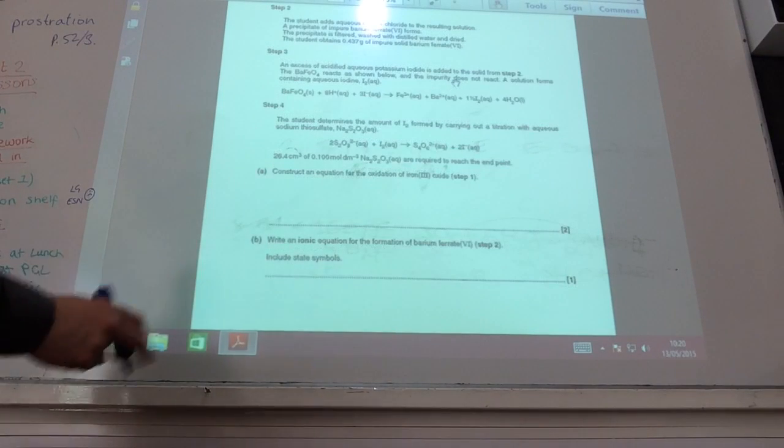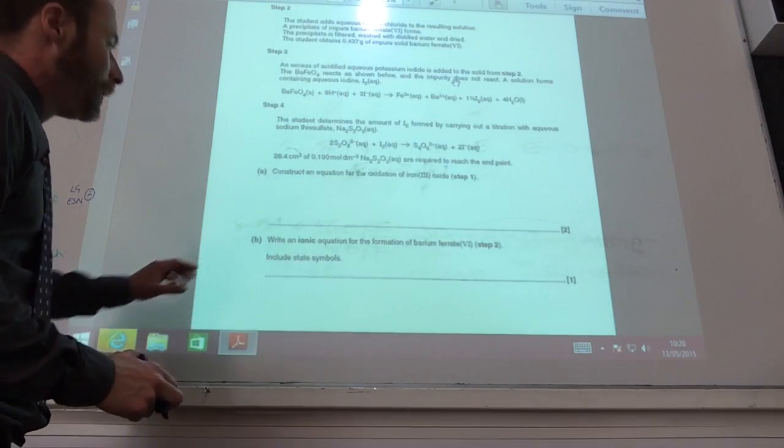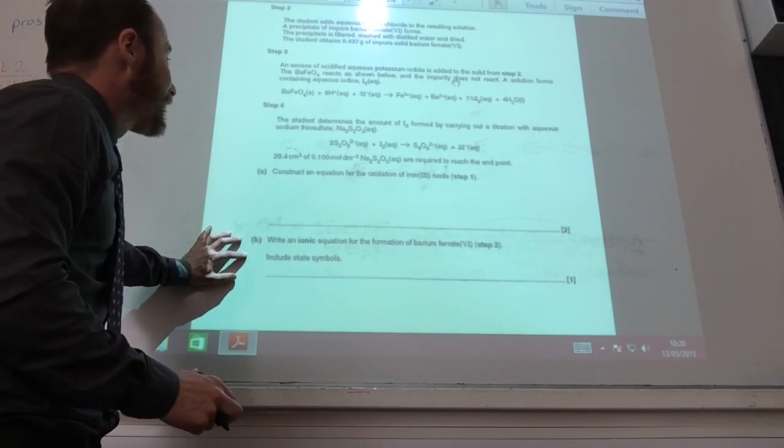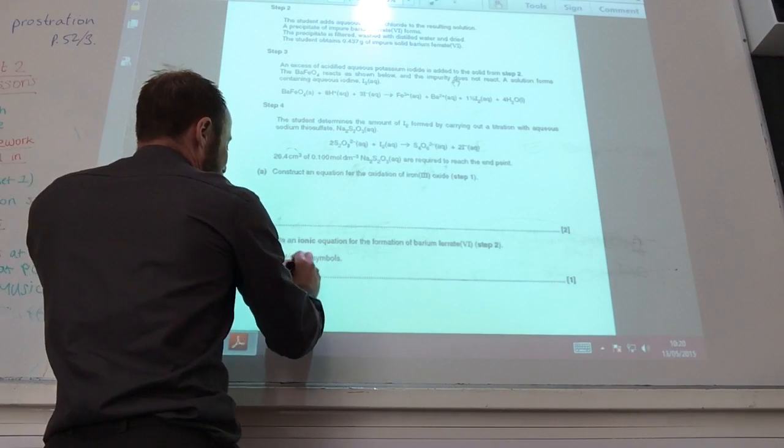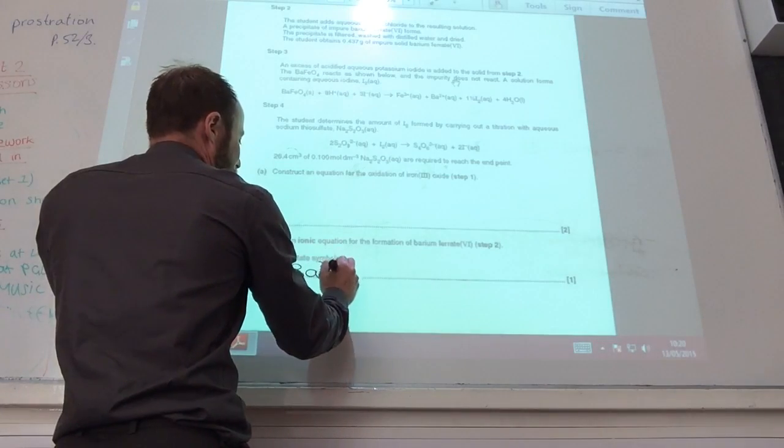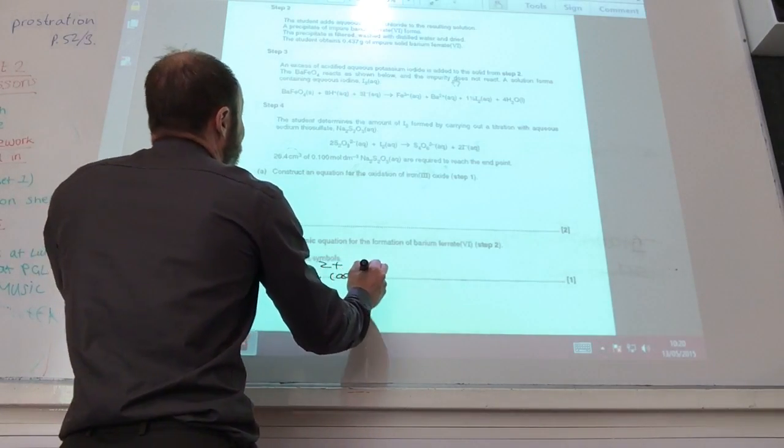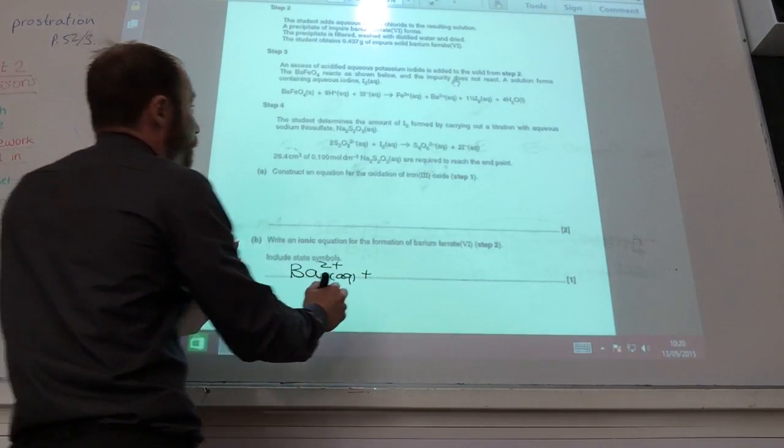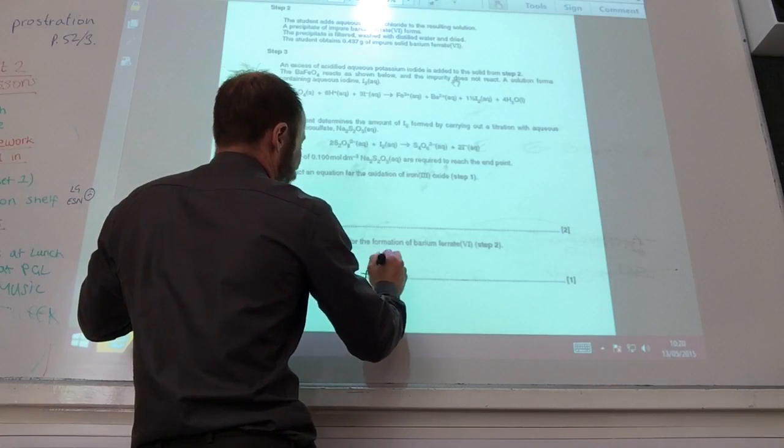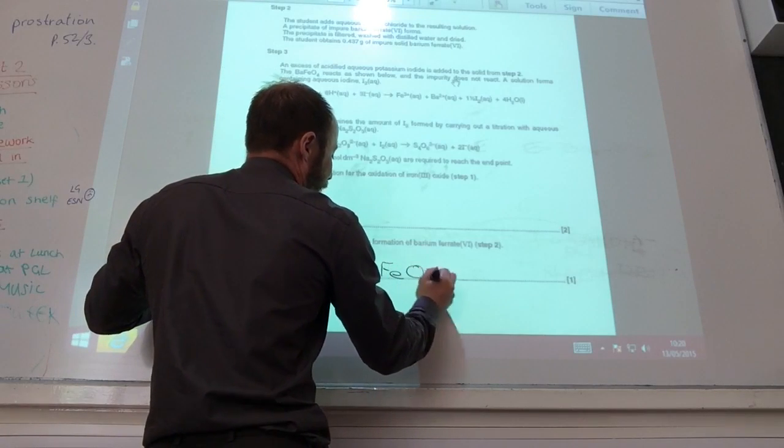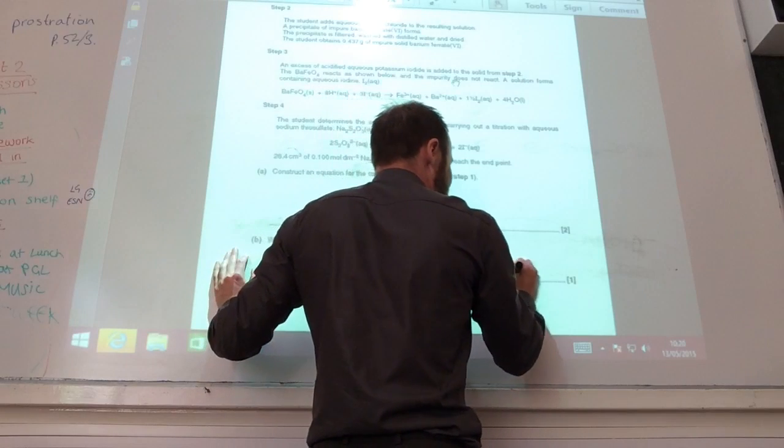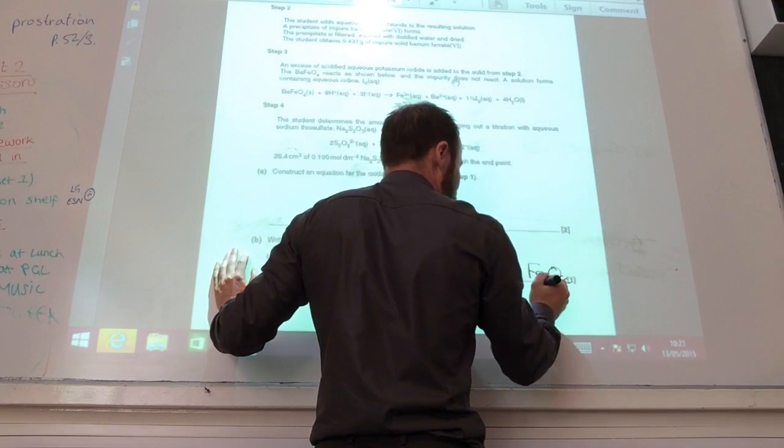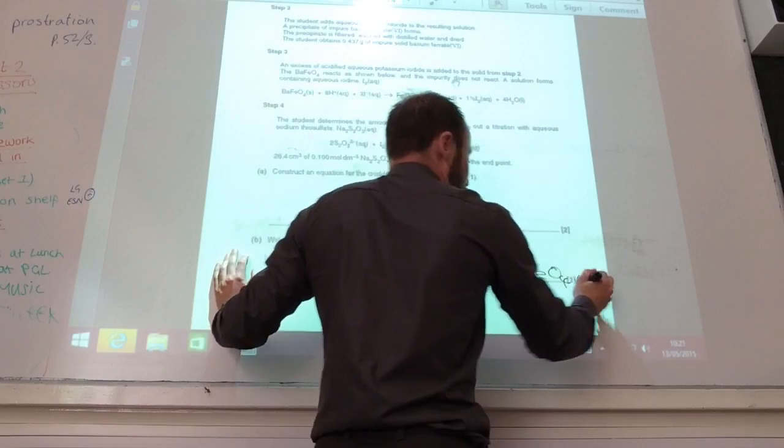The next one is actually easier, and I'll make an equation for the formation of barium ferrite in step two. So I'm adding barium ions, Ba^2+ aqueous, to ferrate(VI) ions, which we know are FeO4^2- ions, to just give me barium ferrite solid.